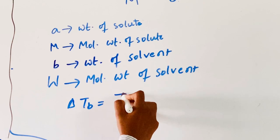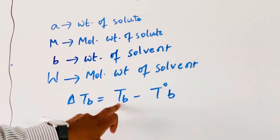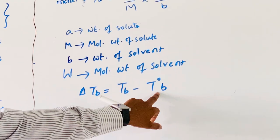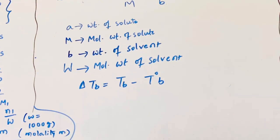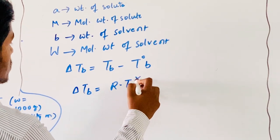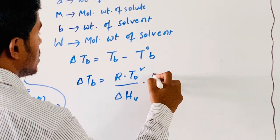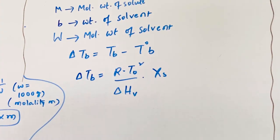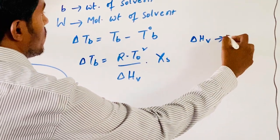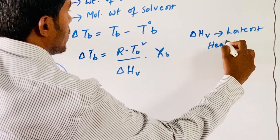Delta Tb equals Tb minus T0b, where Tb represents boiling point of solution and T0b represents boiling point of pure solvent. Now, T0b equals R T0 squared by delta Hv into chi-s. Delta Hv represents latent heat of vaporization.